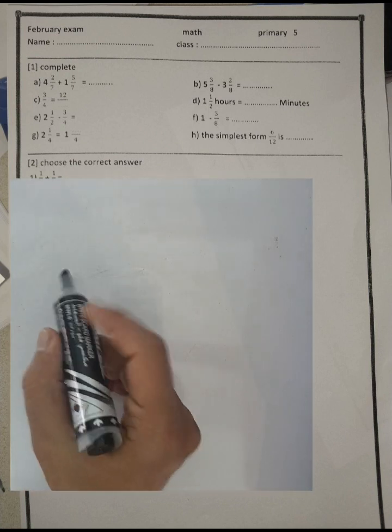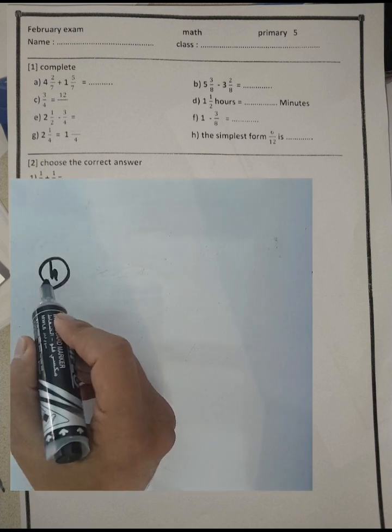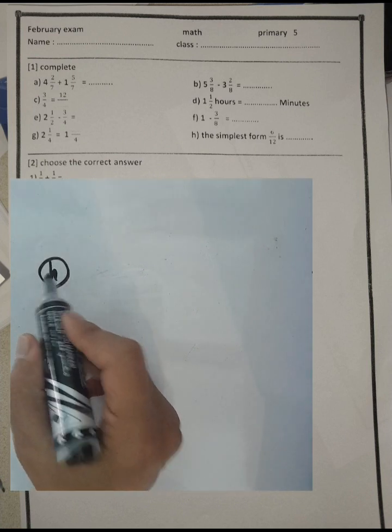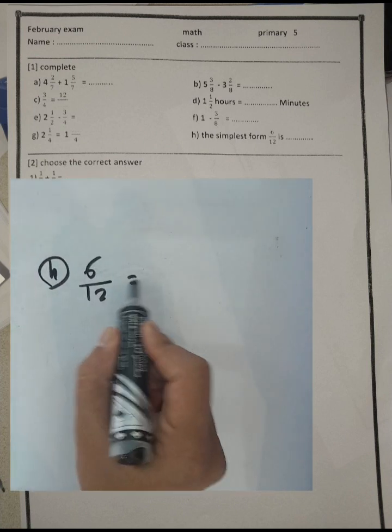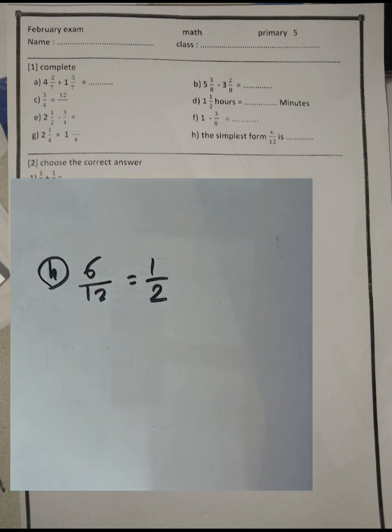Question letter H: the simplest form of six over twelve. We know six is half of twelve, so the result will be one over two.